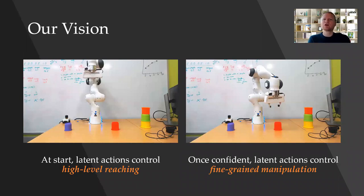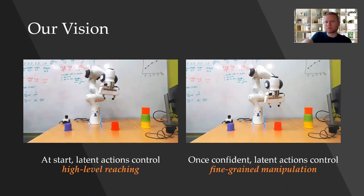Under this approach, the robot's belief determines what the user's inputs control. So at the start of the task, when the robot is not very confident in any goal, user inputs map to high-level routine motions.